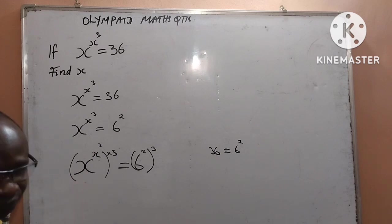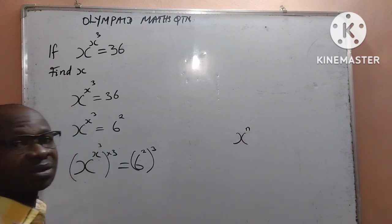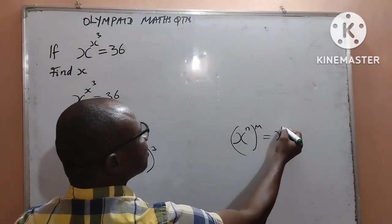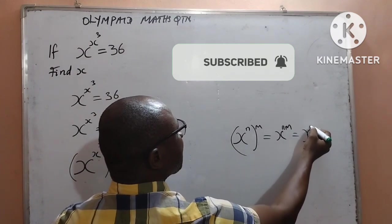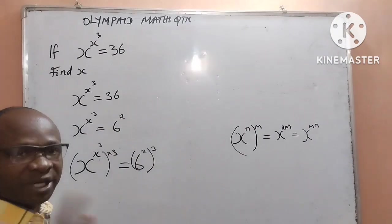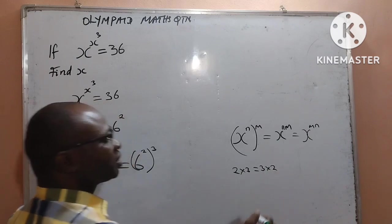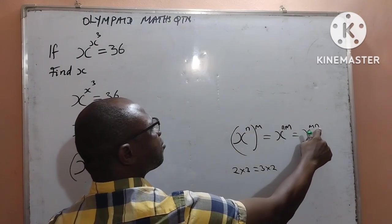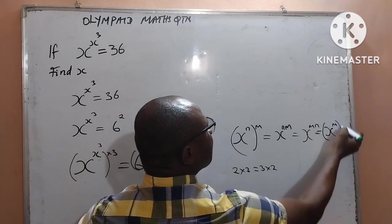The law of indices tells us that when we have x to the power of n, also to the power of n, we should see it as x to the power n times n. It can also be written as x to the power of n, then n — interchanging the positions — because multiplication is commutative: 2 multiplied by 3 is the same as 3 multiplied by 2. So x to the power of n times n is the same as x to the power of n, all to the power of n.